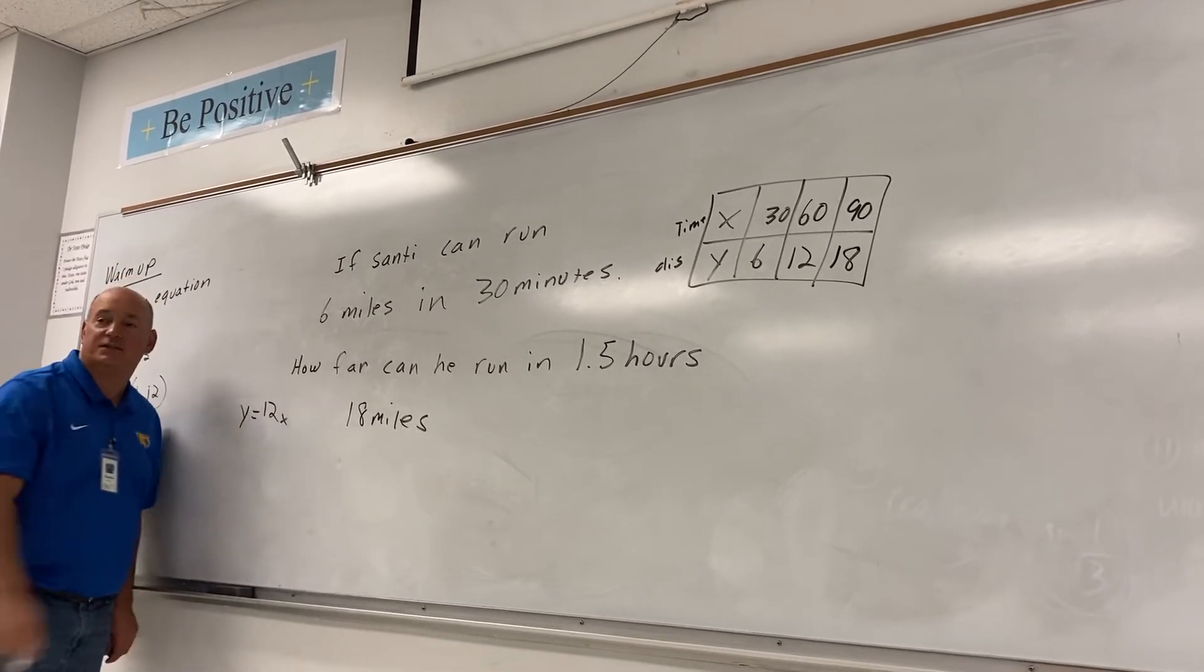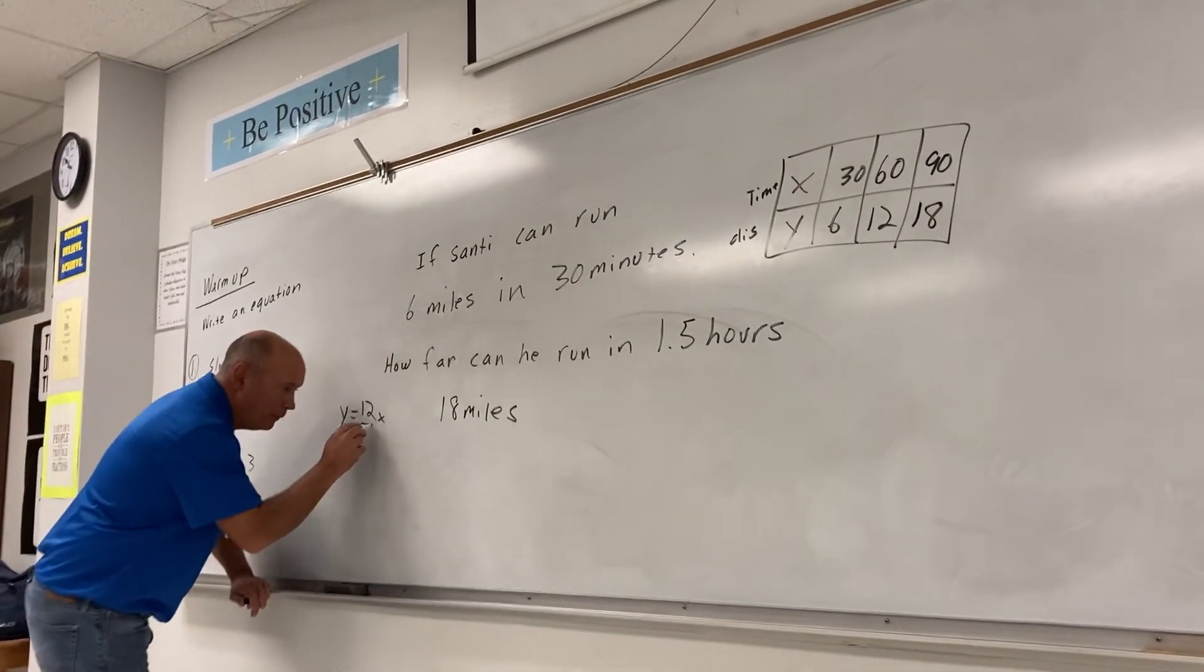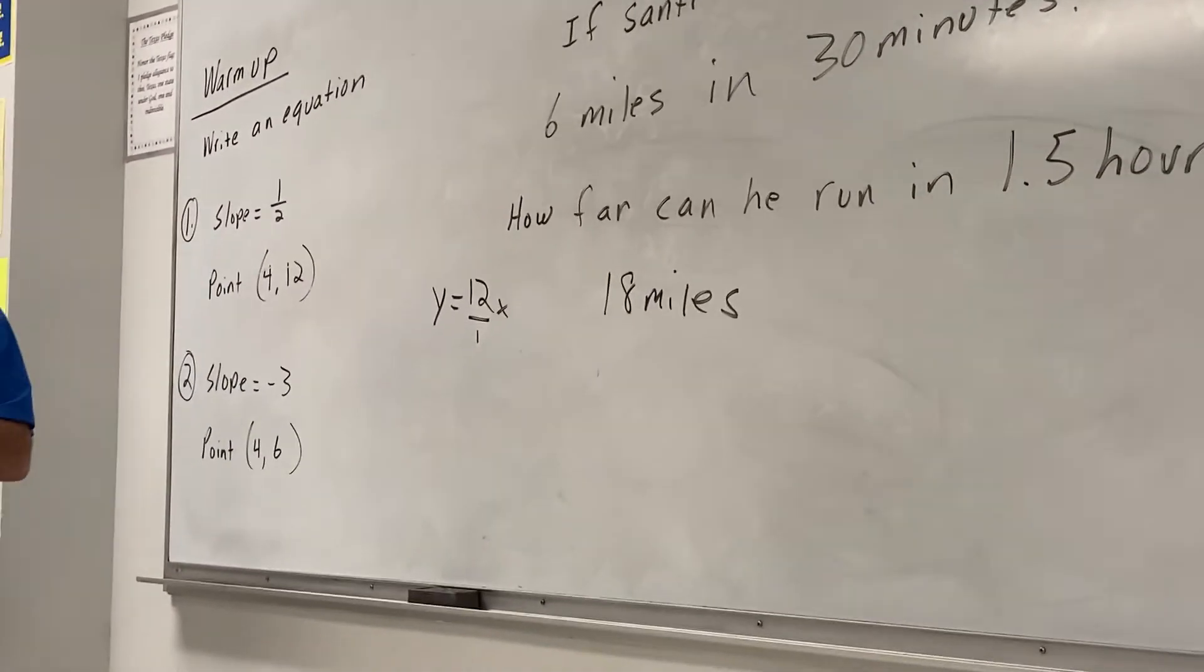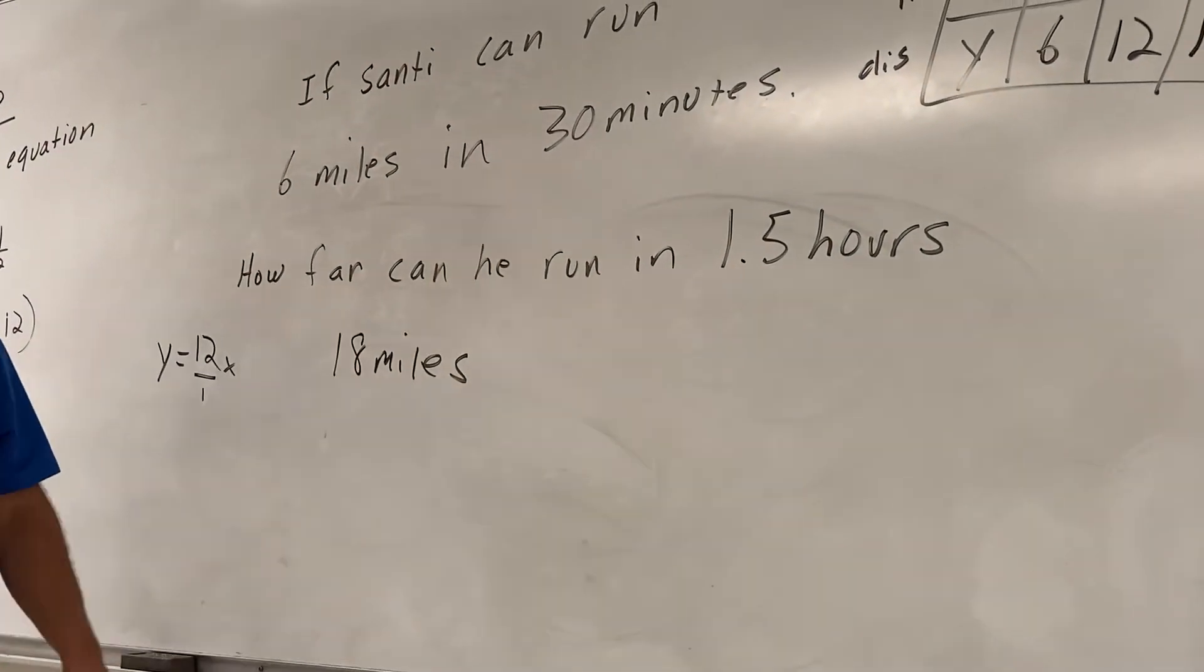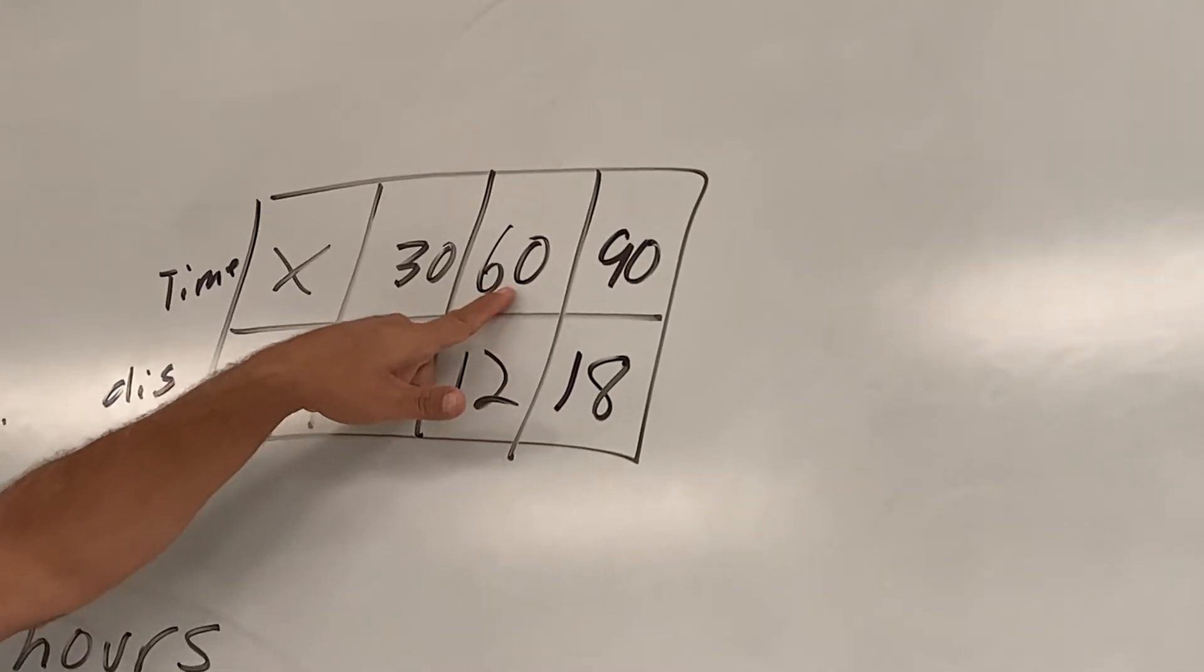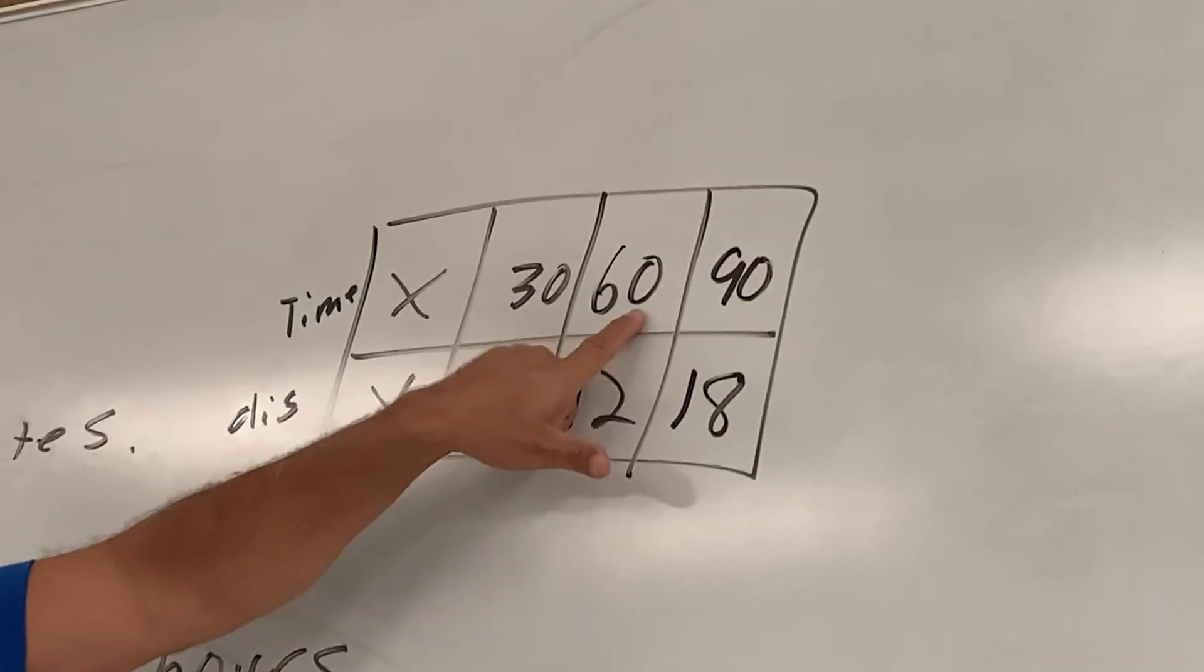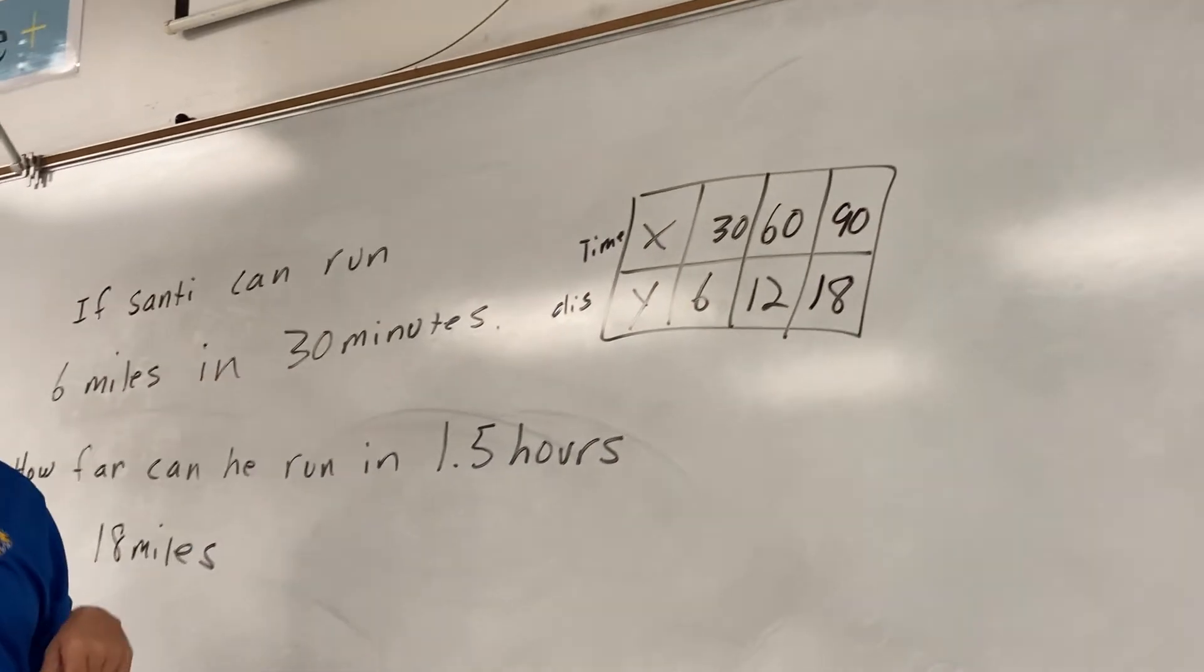Here's the slope for Santiago's problem. 12 over 1. Why is it 12 over 1? Look right here. 12 miles in one what? Hour. Are you with me? That is his slope. He can do 12 miles in one hour because he can do six miles in half of an hour. Are you with it?